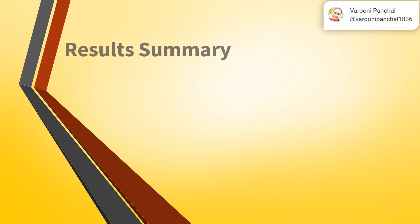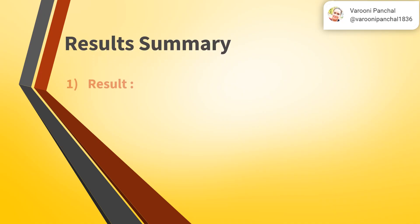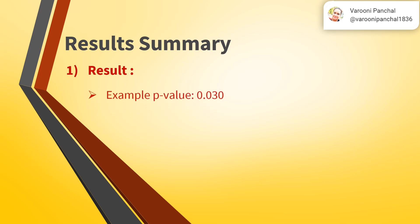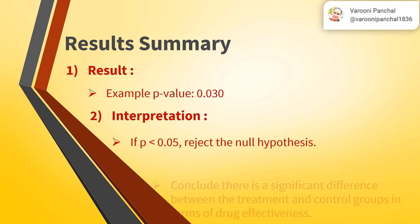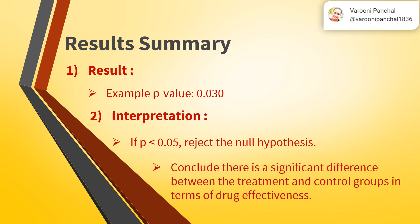Result Summary. Example P-value: 0.030. Interpretation: If P is less than 0.05, reject the null hypothesis. Conclude there is a significant difference between the treatment and control groups in terms of drug effectiveness.